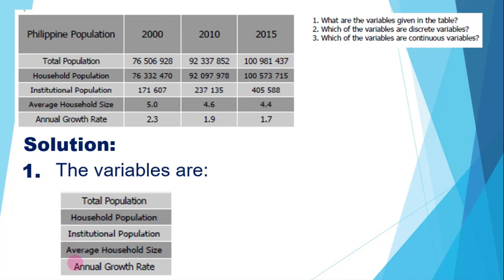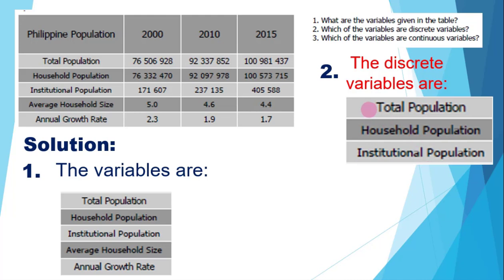Among these 5 variables, we have to classify which are discrete variables. For number 2, the discrete variables are those whose elements can be counted as whole numbers — 0, 1, 2, 3, and so on — with no decimal point or fraction. In this case, the discrete variables are total population, household population, and institutional population, since these are all counting numbers.